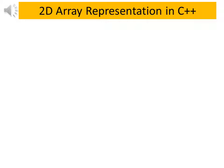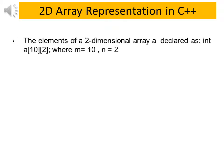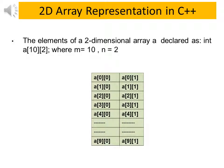Now see the two-dimensional array representation in C++. The elements of two-dimensional array are declared as integer a[10][2], where m equal to 10 which denotes number of rows in array and n equal to 2 that represents the number of columns. This is given in our exercise. The storage of elements in two-dimensional array is shown in figure.